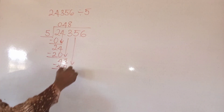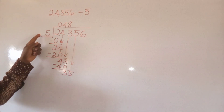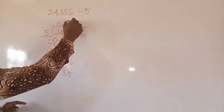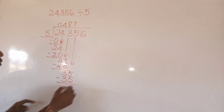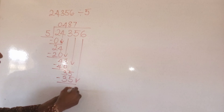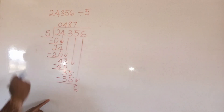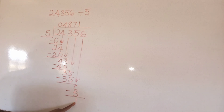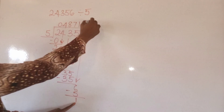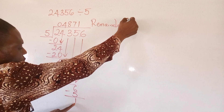Then bring down five — thirty-five. Thirty-five divided by five will give me just seven. Seven times five will give me thirty-five. So if we subtract, it will give me zero. So we bring down six. Now we divide: six divided by five gives me one. One times five will give me five. So subtract again — we have a remainder of one.